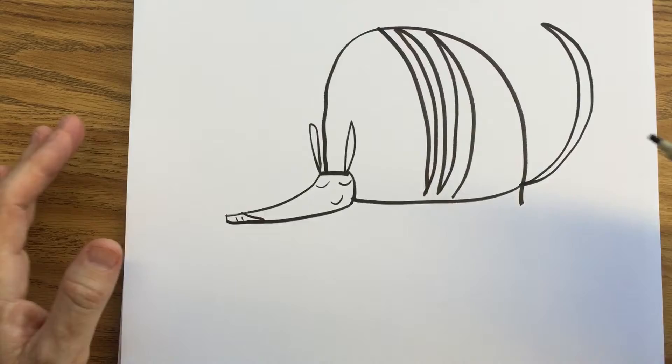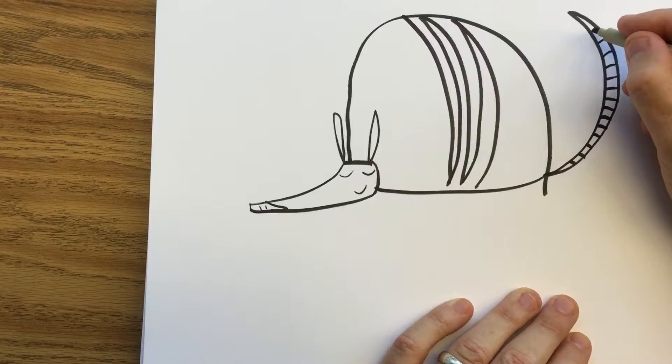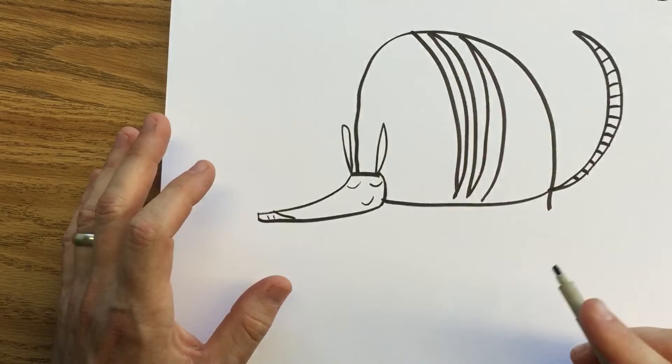Because remember, this is like a little hard suit of armor. Even this tail is, so it has these little lines so it can curl up. That's why those lines are there, because actually an armadillo could turn into a perfect ball when he wants to hide from people.